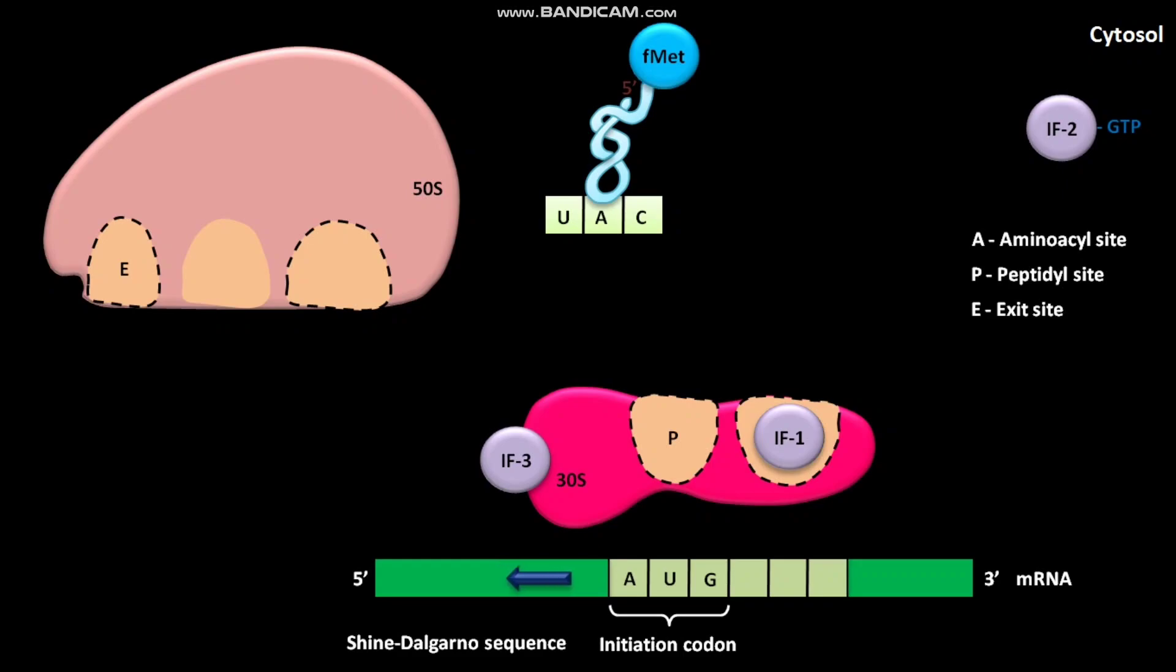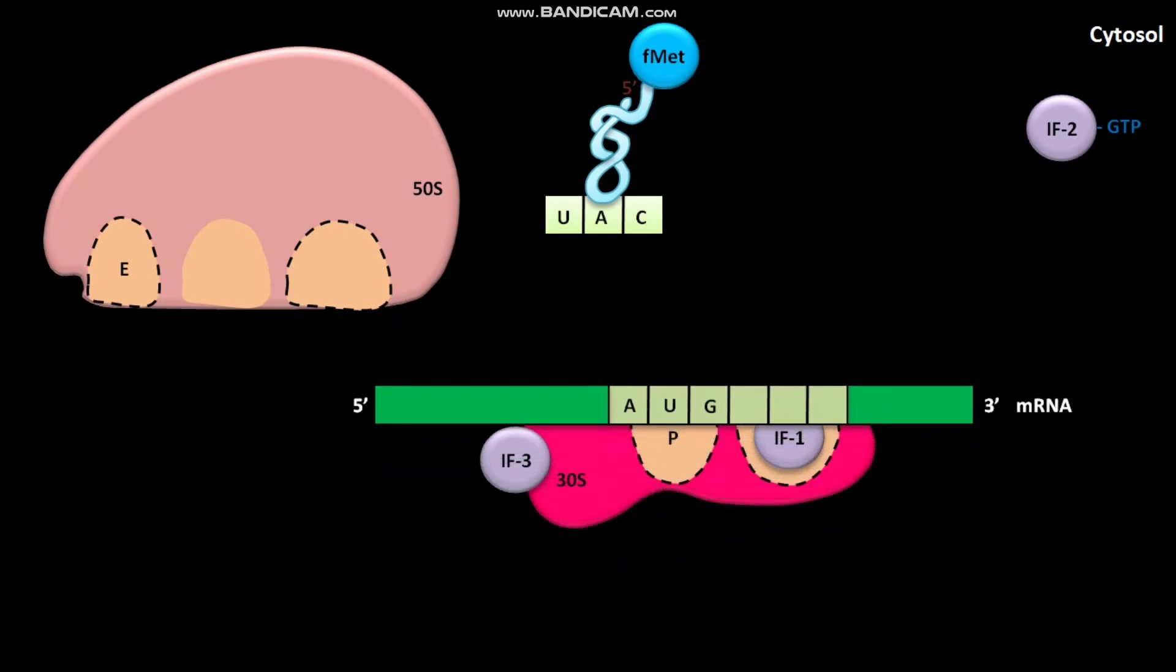After the binding of IF1 to the A site of 30S subunit, the mRNA binds to the 30S subunit. The mRNA binds to the 30S subunit in such a way that its 5' AUG codon is positioned at the P site. IF3 facilitates the binding of the mRNA to the 30S subunit of ribosome.